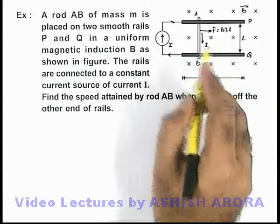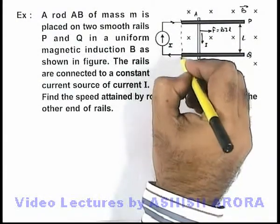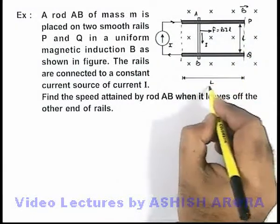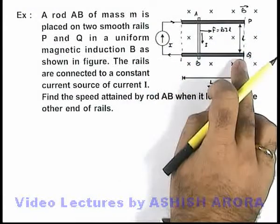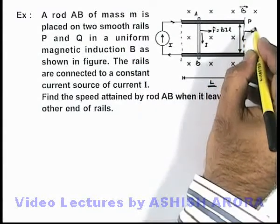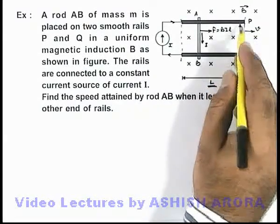Due to which the wire will accelerate, and if the wire is starting from one end, when it reaches the other end, it would have covered a total distance L that is equal to the length of the rails. So when it breaks off, it will move off with speed v from these rails.